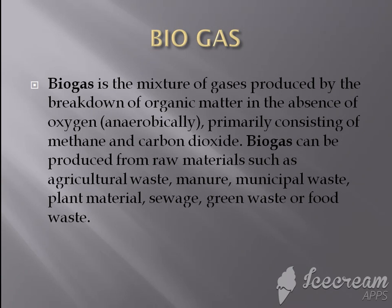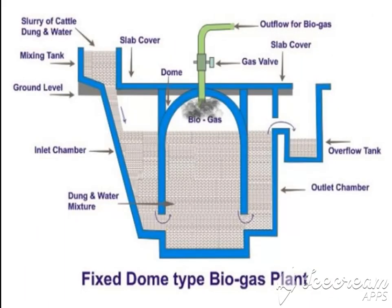Biogas is produced in a biogas plant. This is a fixed dome type biogas plant. The outlet you can see is biogas escaping from this pipe. This part is called the digester. This chamber is known as the inlet chamber and this is the outlet chamber. This is the place where slurry of cattle dung and water are added — it is also called the mixing tank.